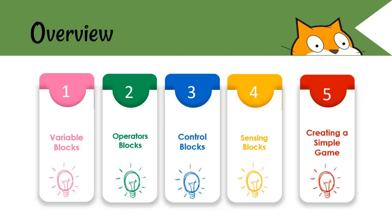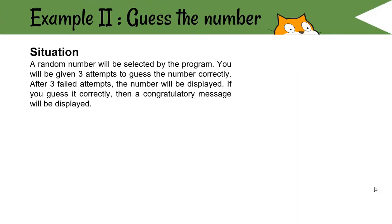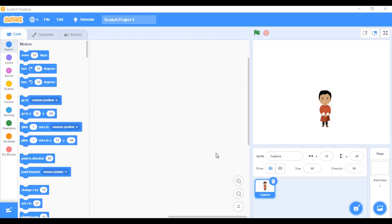Finally we'll be creating some simple games using these four blocks. Let us try to create the second example game: 'Guess the Number.' In this game, at the beginning a random number will be selected by the program. You will be given three chances to guess it correctly. If you fail, you get a message saying you got it wrong and the correct number is revealed. If you guess correctly, you get a congratulatory message.